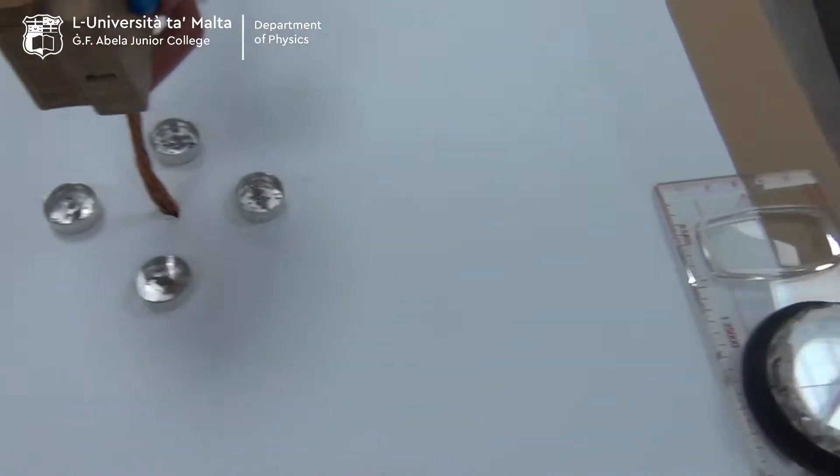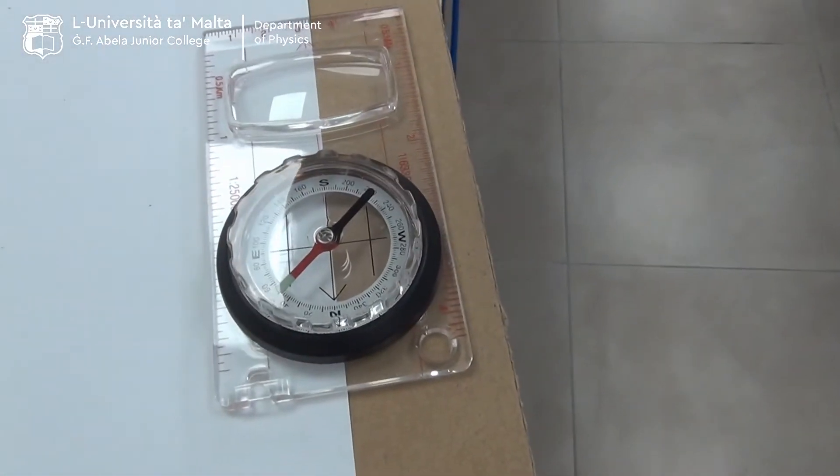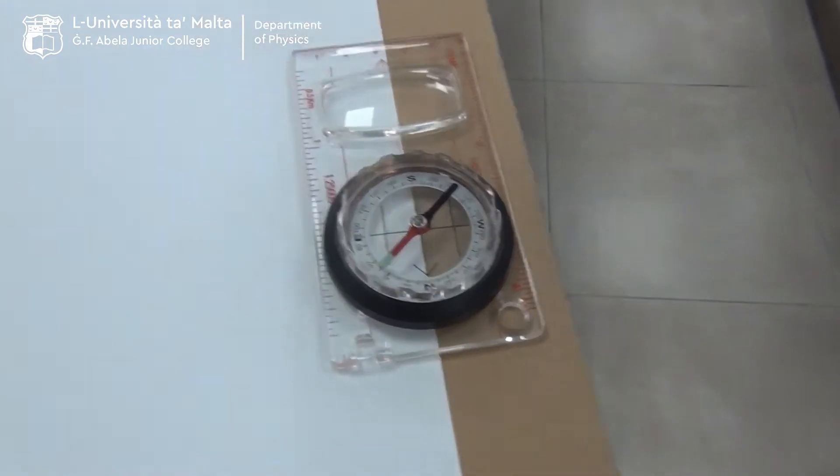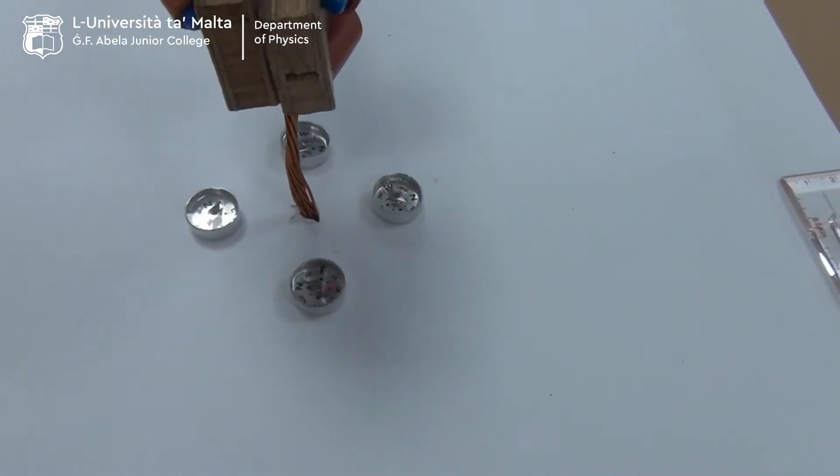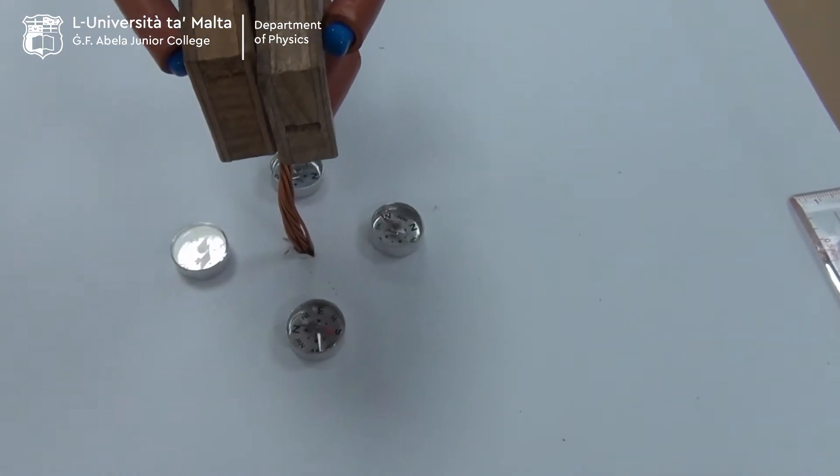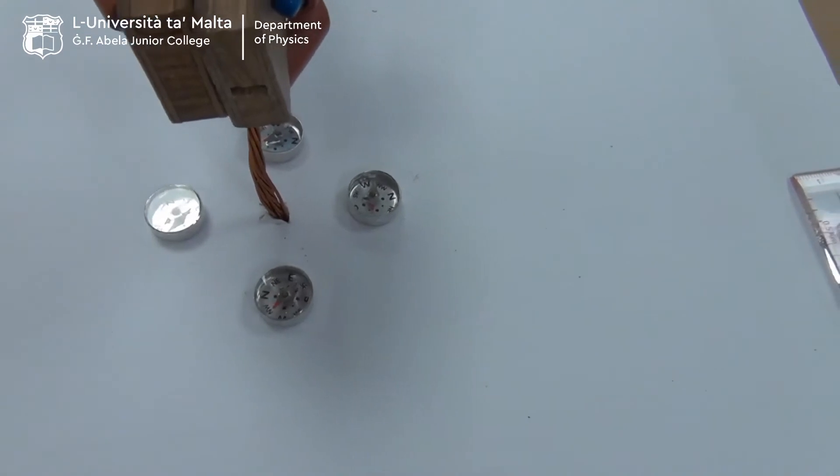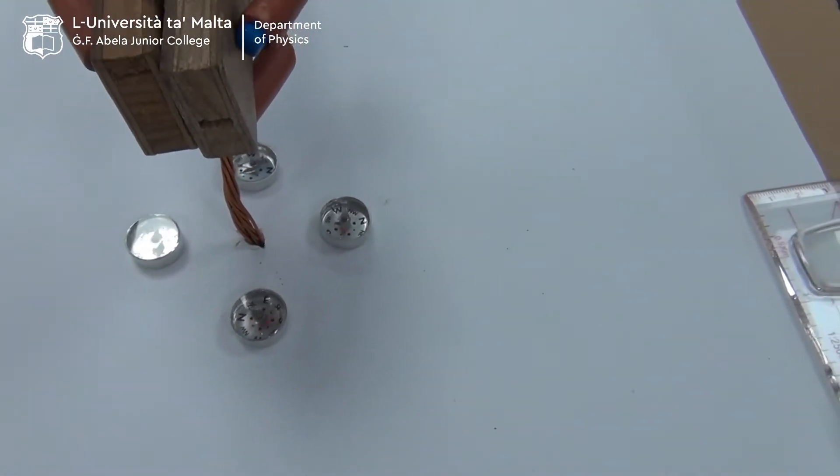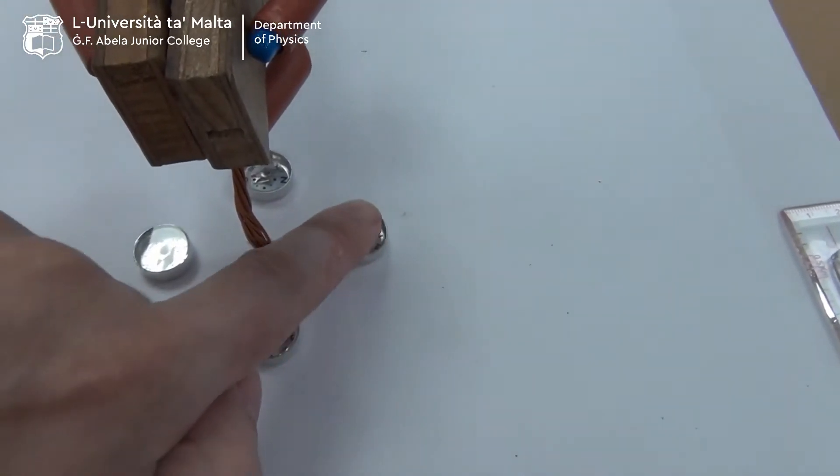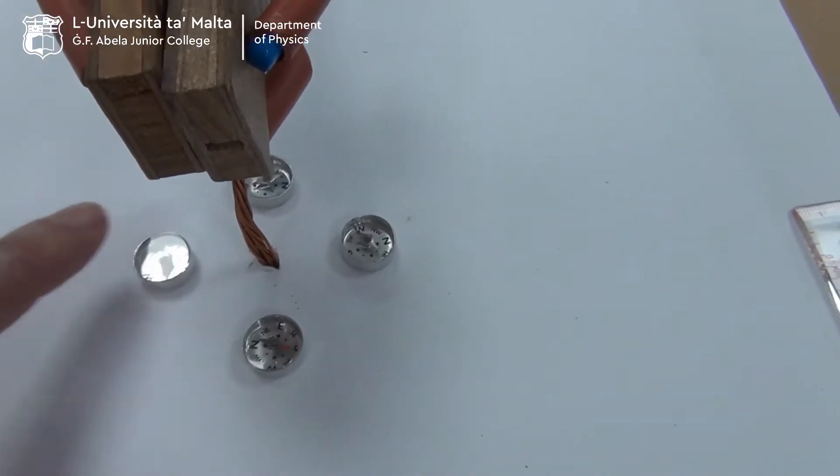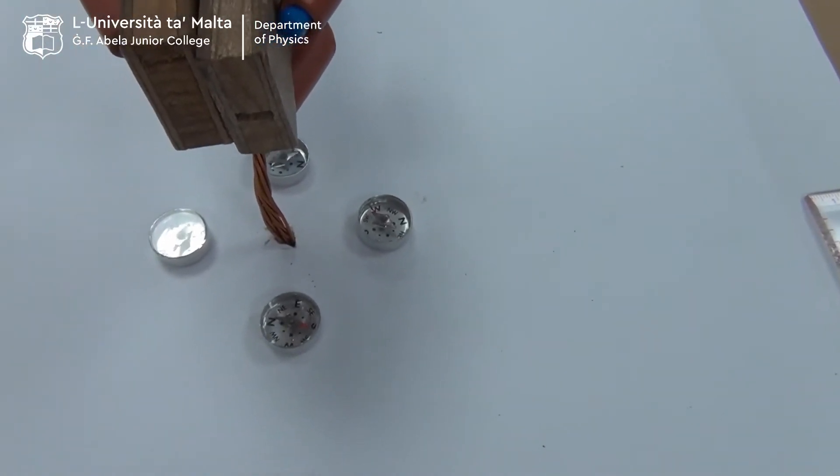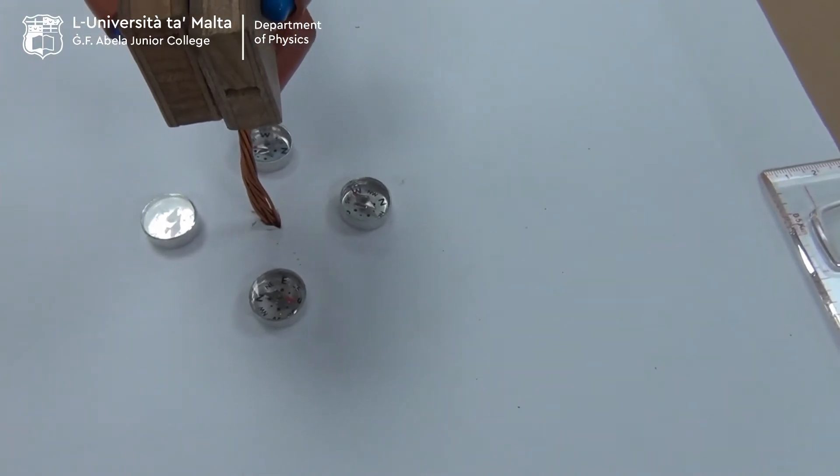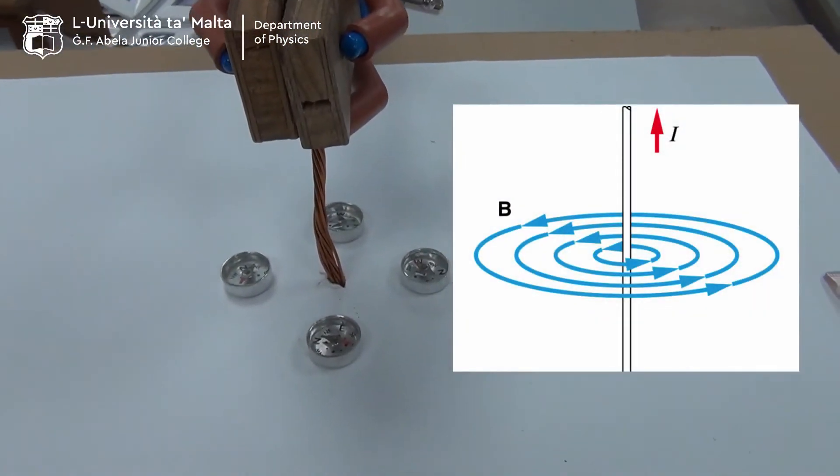The other compass needle didn't change direction. This is unaffected because it is away from the current. When we switch off, the compass needles will go back to their original position. Switching on, they change direction. Sometimes I need a tap. This is an indication that the current which is flowing in the wire is causing a magnetic field.